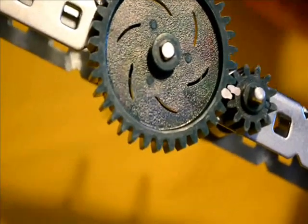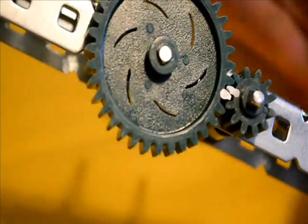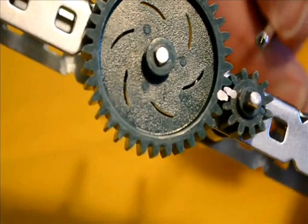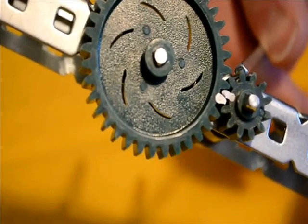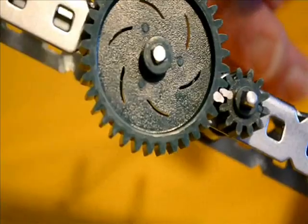This is known as a three-to-one gear ratio because the driving gear needs to go around three times before the driven gear has gone around once.